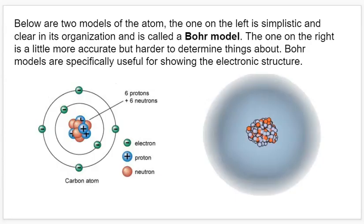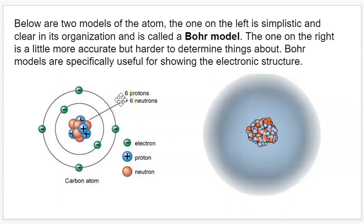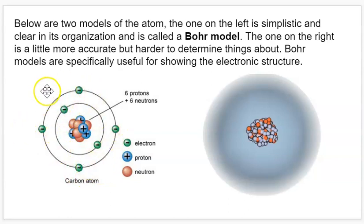Below here I have two models of an atom. The one on the left is called a Bohr model. It's very simplistic, not exactly accurate to what atoms look like in reality, but it's a really clear way to demonstrate how many electrons are in the various energy shells of an atom.